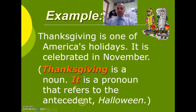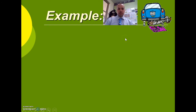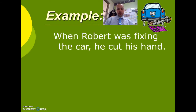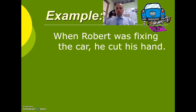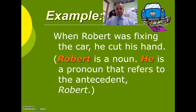Antecedent is just the noun. So Thanksgiving is our noun or antecedent, and 'it' is the pronoun. Another example: 'When Robert was fixing the car, he cut his hand.' Robert is the noun, and 'he' is a pronoun that refers to the antecedent. Robert is the antecedent.